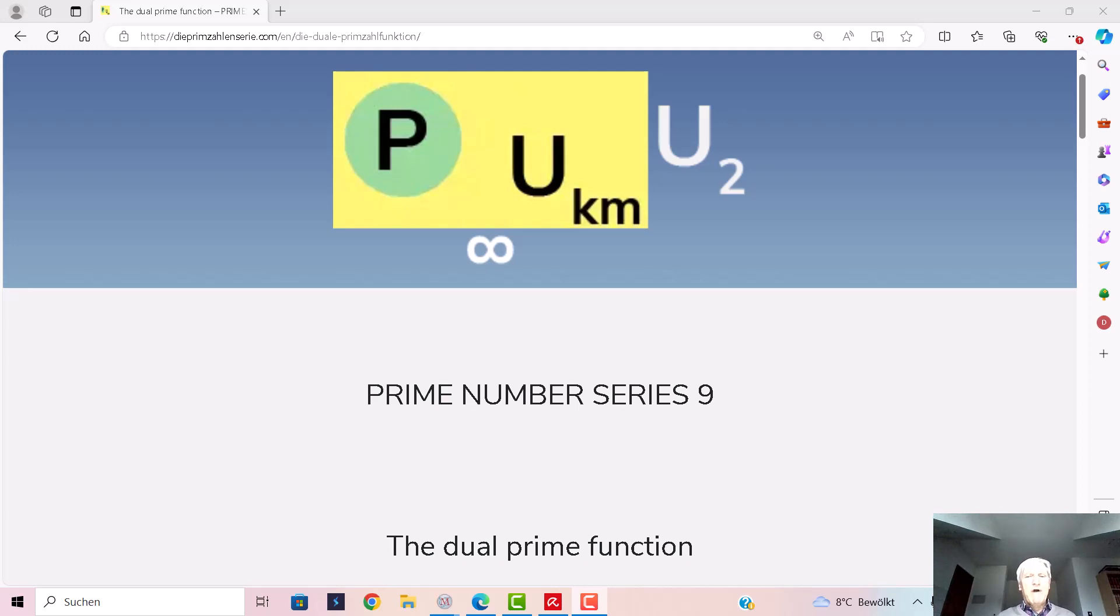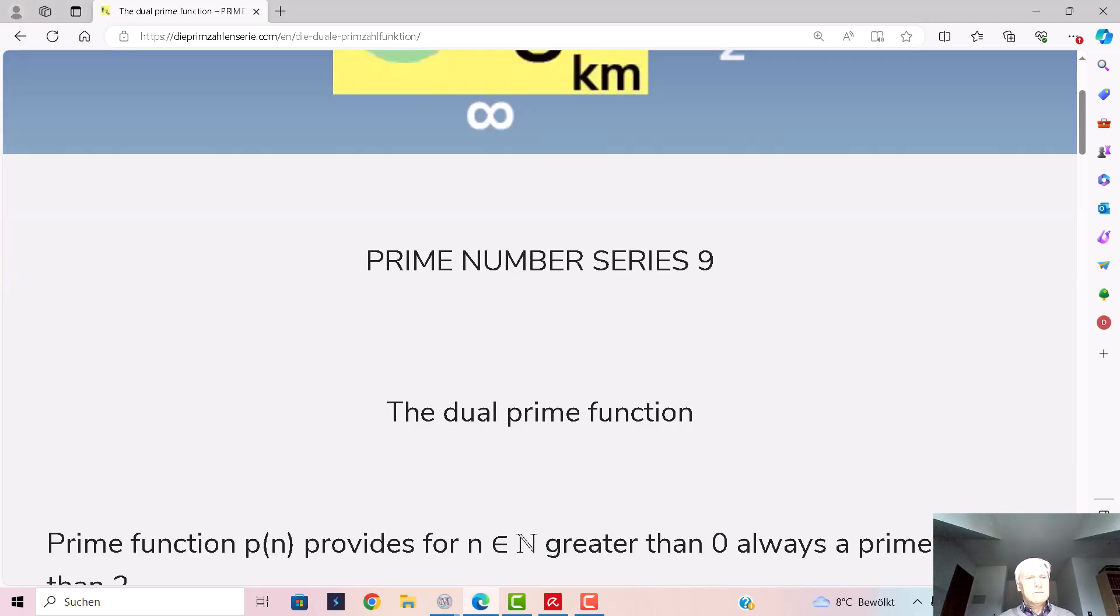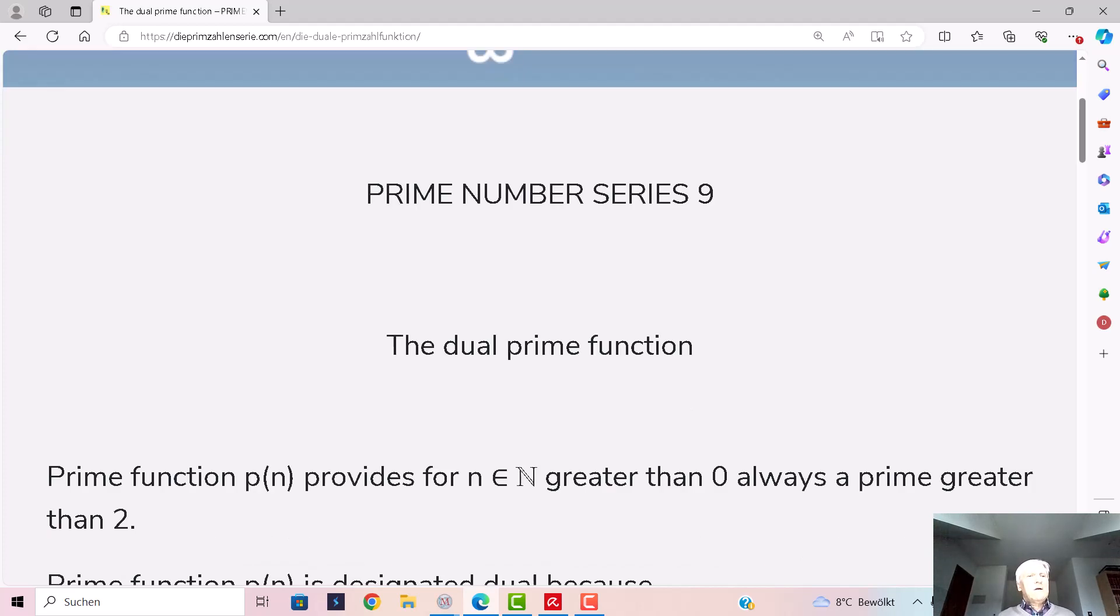The dual prime function. Prime function p(n) provides for n ∈ ℕ greater than 0, always a prime greater than 2.